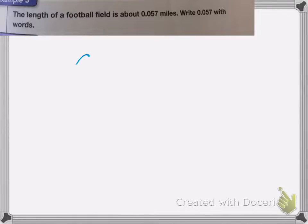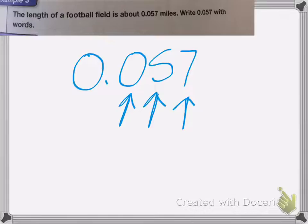So let's count our place values. We have tenths, hundredths, thousandths. So we know it's in the thousandths place value. We're going to write the number given, so 57, write it in words, 57.